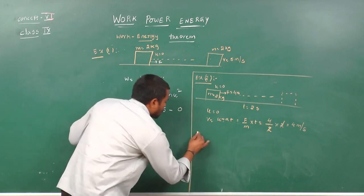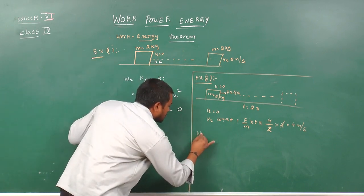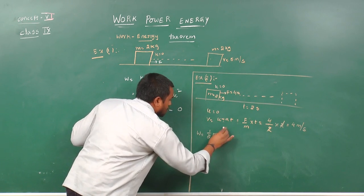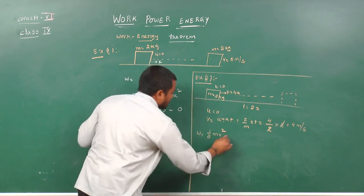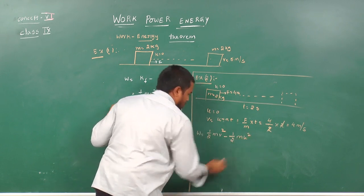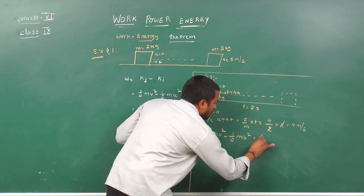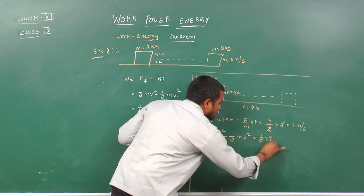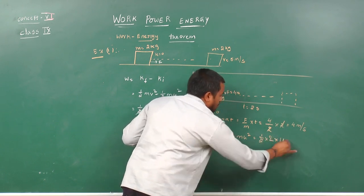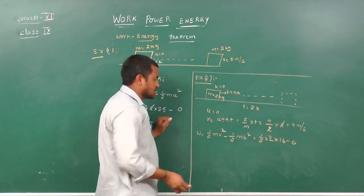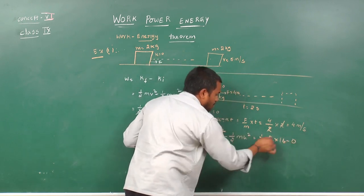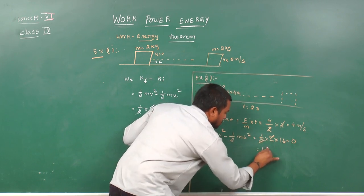Work done equals final kinetic energy minus initial kinetic energy, which is one-half times 2 kg times 4 squared minus 0 (since initial velocity is 0). The 2s cancel, giving 16 joules.